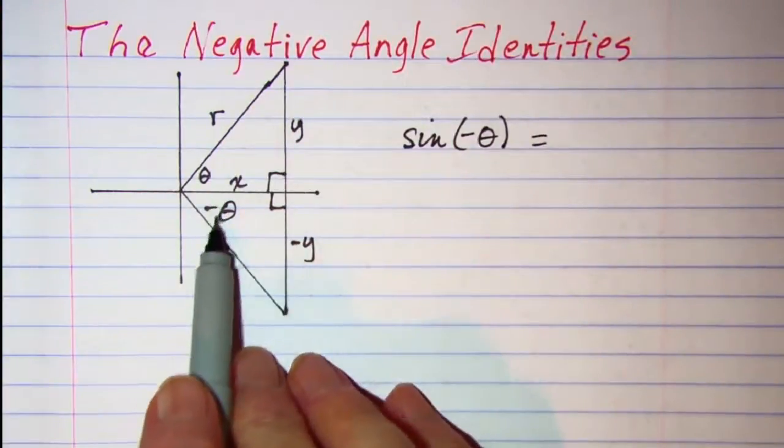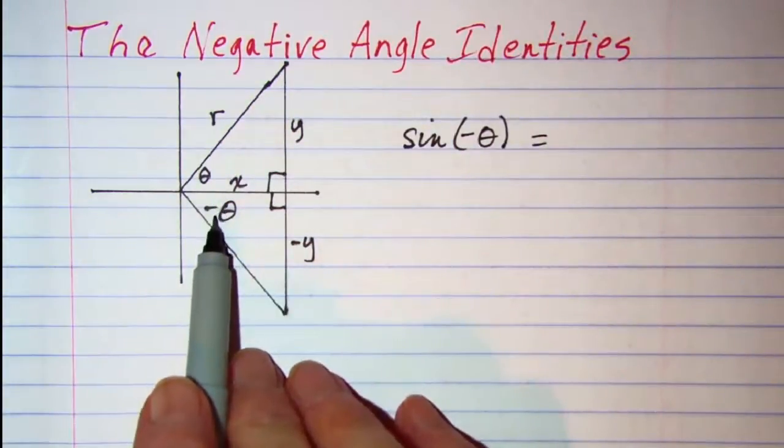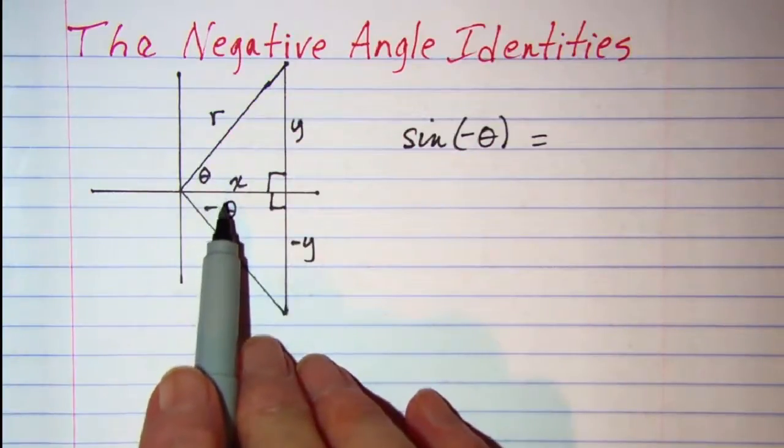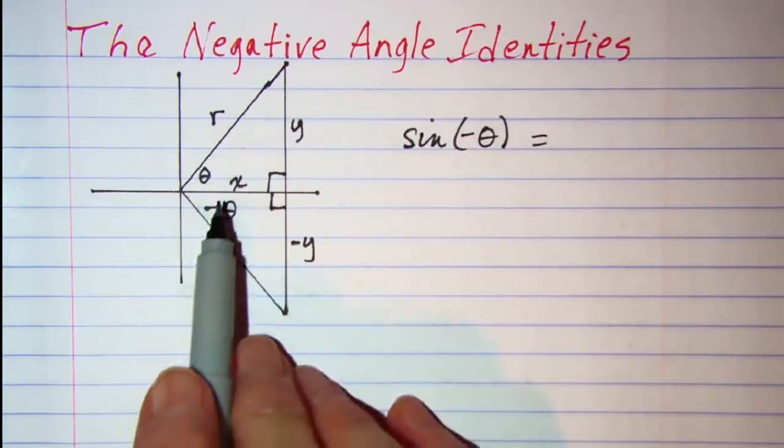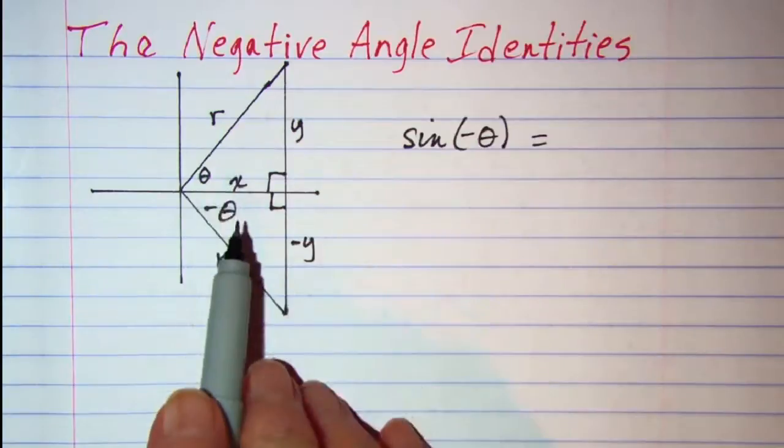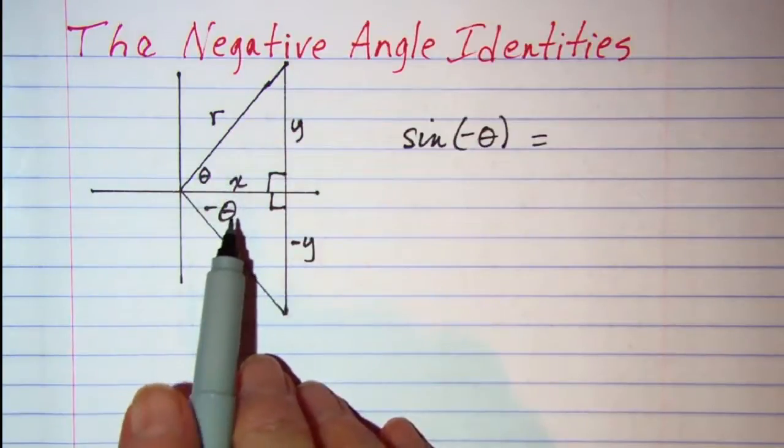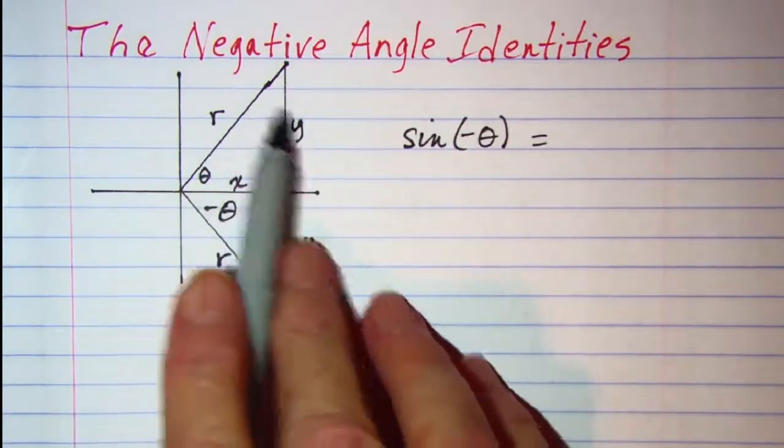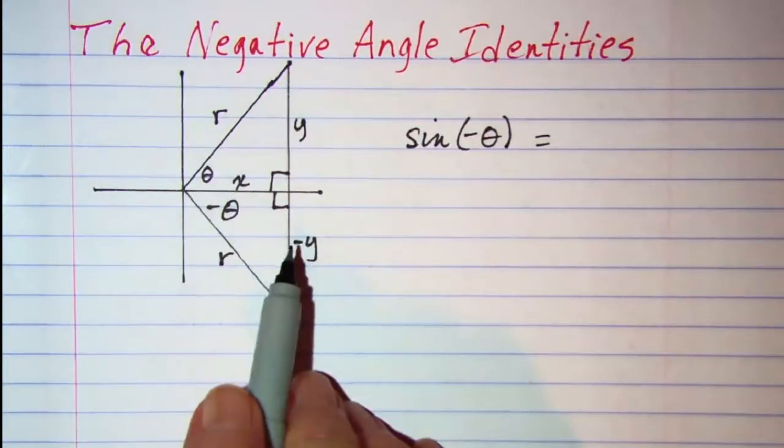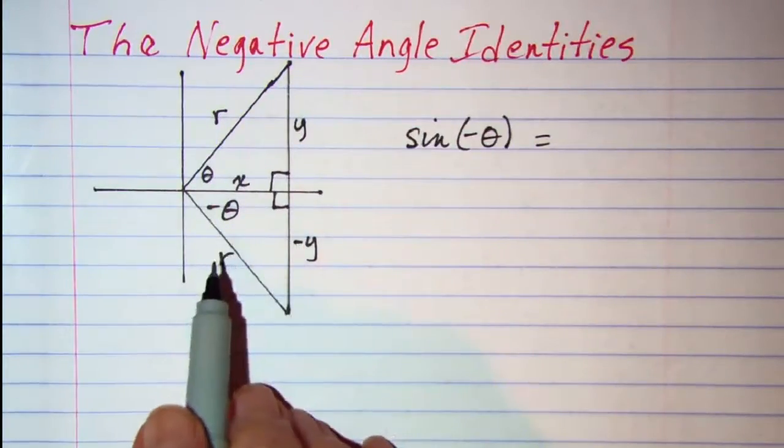This is our negative theta since it's starting at the x-axis and rotating clockwise, and this one will be our positive theta. We know that the sine of positive theta is y over r. The sine of negative theta is negative y over r.